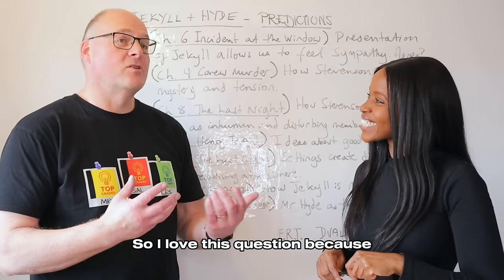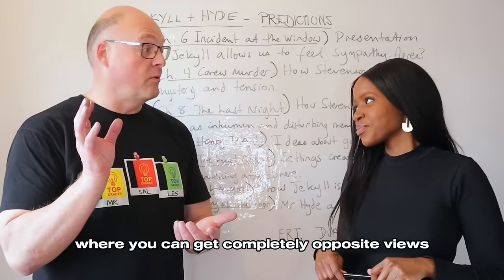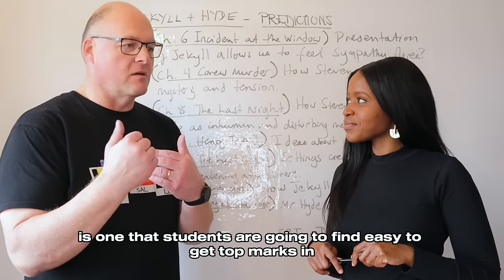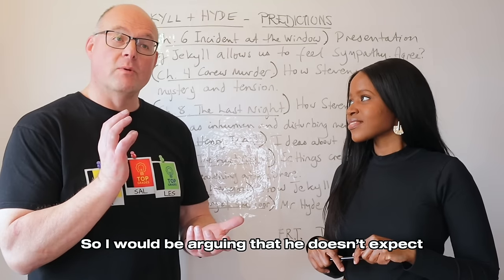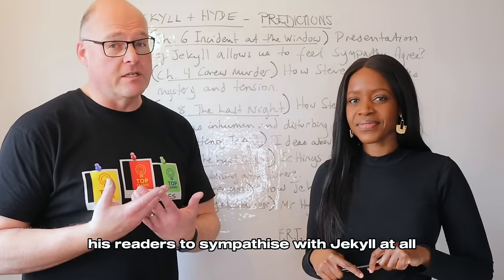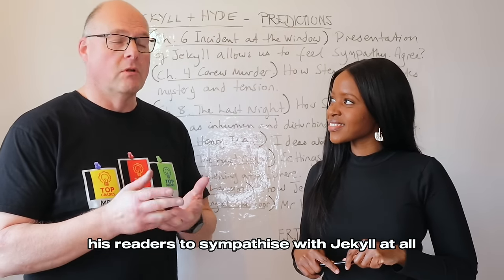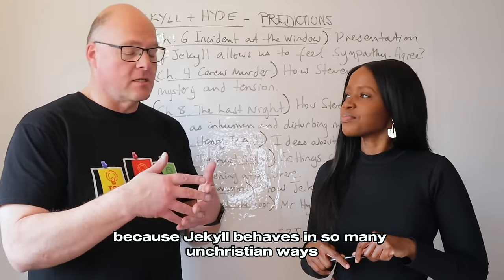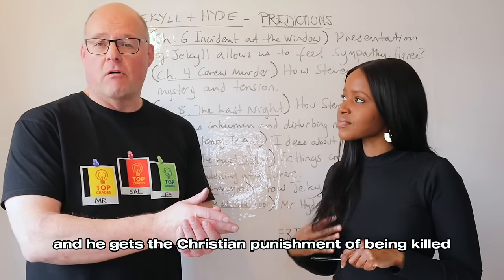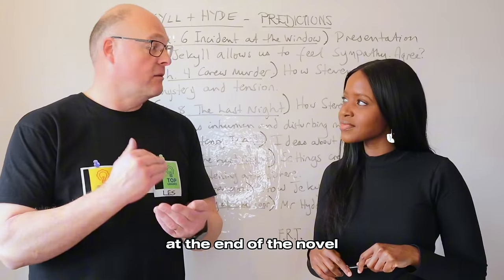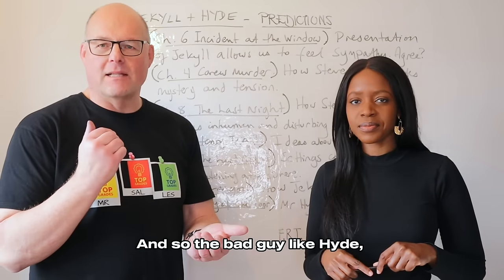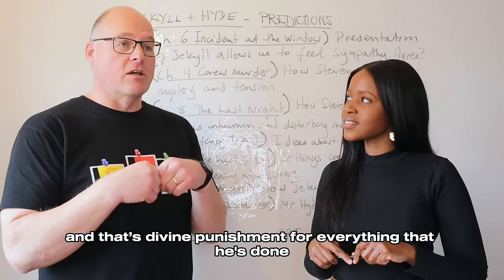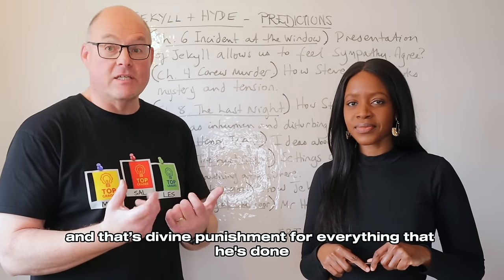I love this question because any question where you can get completely opposite views is one that students will find easy to get top marks in. I would argue that Stevenson doesn't expect readers to sympathise with Jekyll at all, because Jekyll behaves in so many unchristian ways. He gets the Christian punishment of being killed at the end of the novel — both Hyde and Jekyll are killed off, and that is a kind of divine punishment for everything he has done.